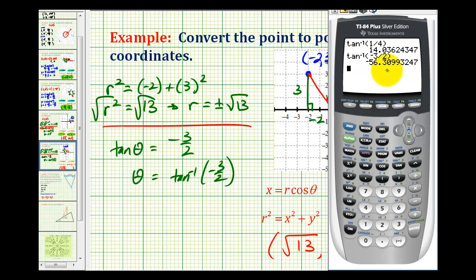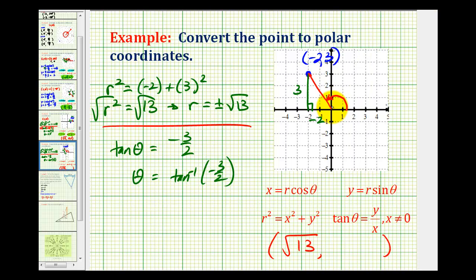Let's sketch this to see what's happening. Negative 56.3 degrees would have a terminal side here in the opposite direction. This angle does have a tangent function value of negative 3 halves, but it's not the angle we need. We could use it if we used a negative value for r. If we let r equal negative square root 13, then the terminal side of theta would point in the opposite direction of the point, which would be negative 56.3 degrees.